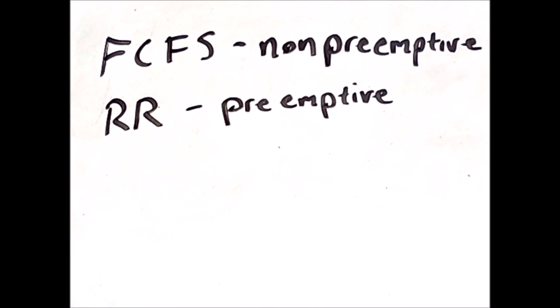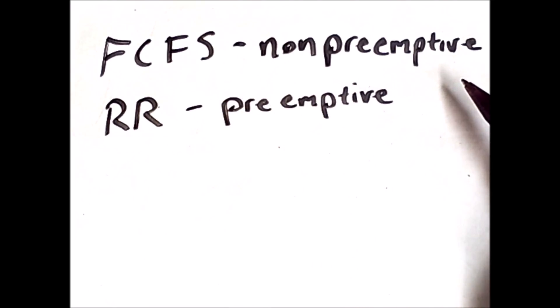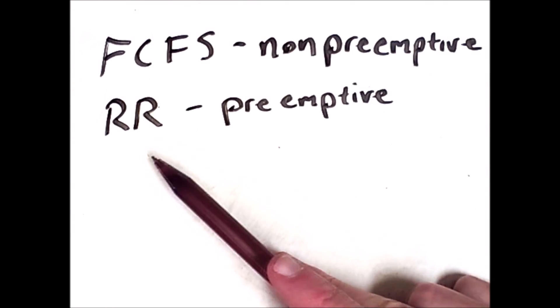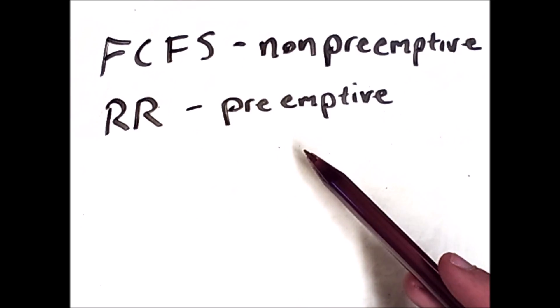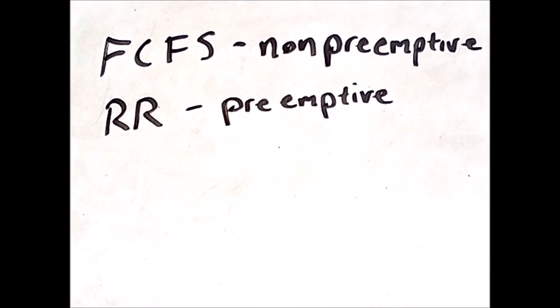One final note I'd like to point out about these algorithms is that first come first serve is a non-preemptive algorithm. This means that once a process has started running, it is not interrupted. It simply goes to completion. In contrast, round robin is a preemptive algorithm in that running processes can be kicked off the processor mid execution. We'll see more examples of this in upcoming videos.